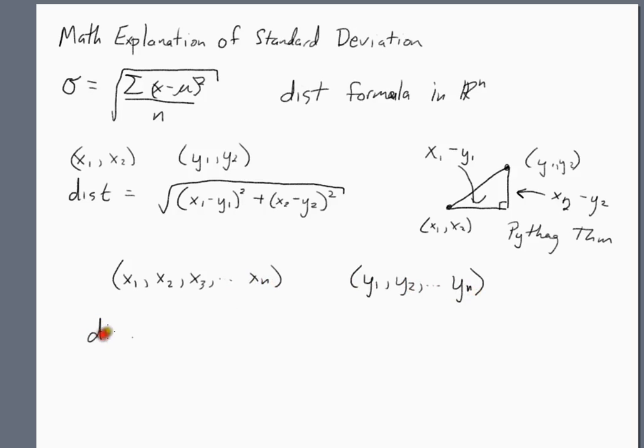So the distance is just the square root of, well you go x1 minus y1 squared, x2 minus y2 squared, plus so on and so forth, until you finally get to xn minus yn squared. So that's kind of the Pythagorean theorem in any number of dimensions. This is your distance.